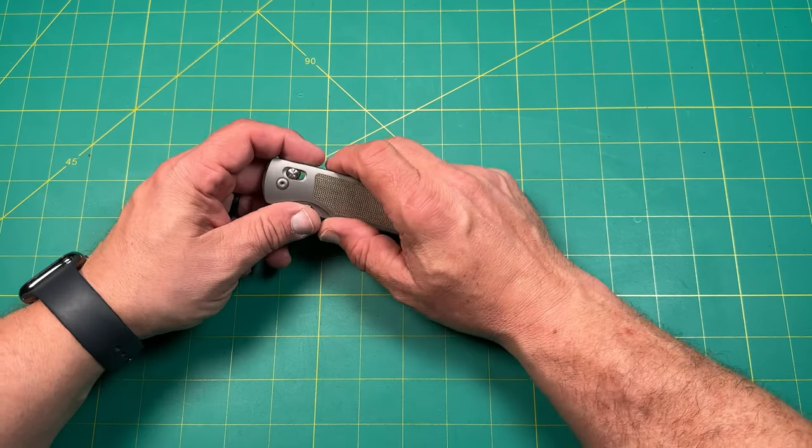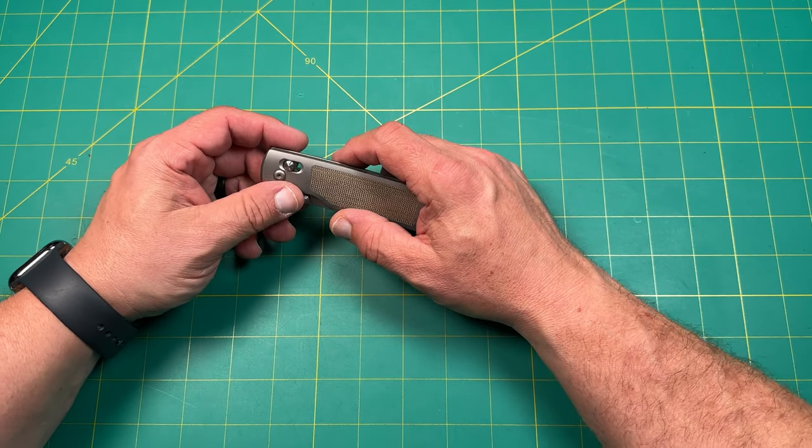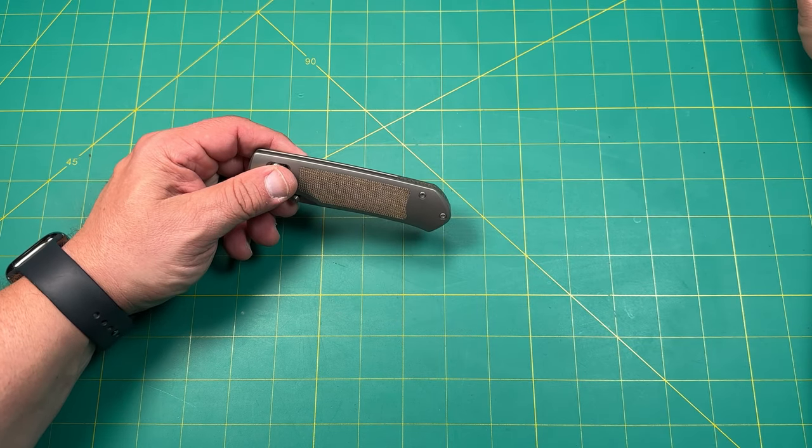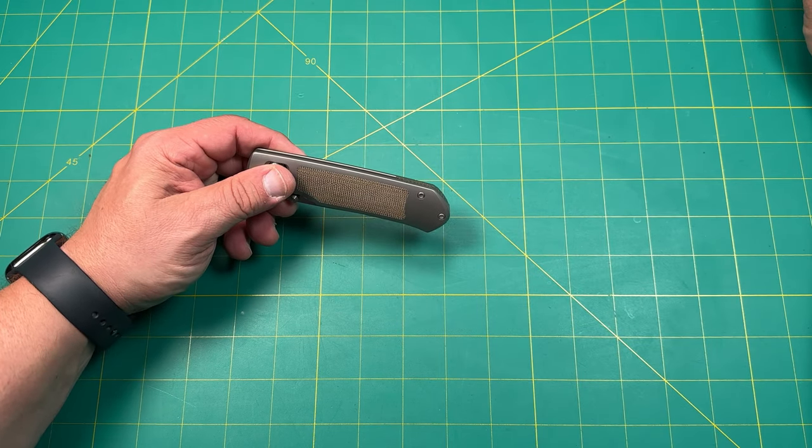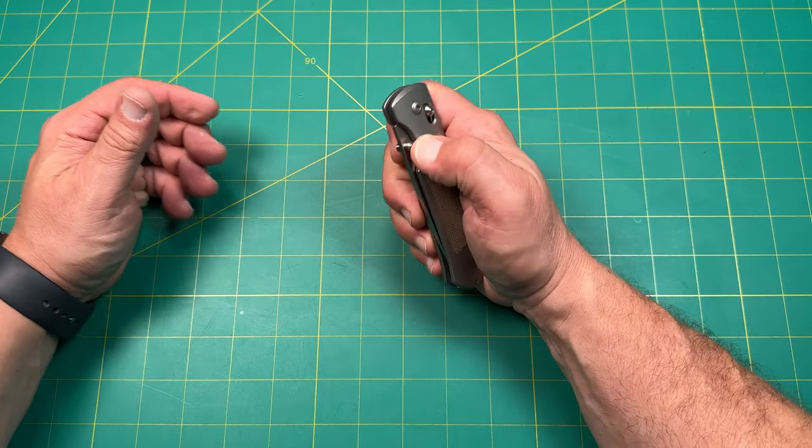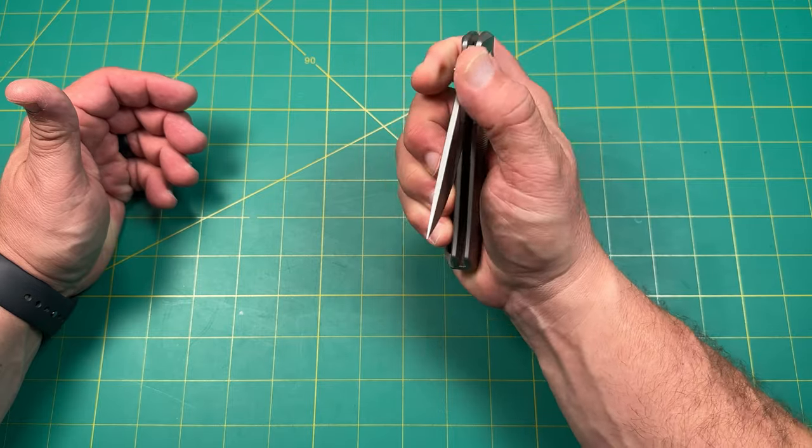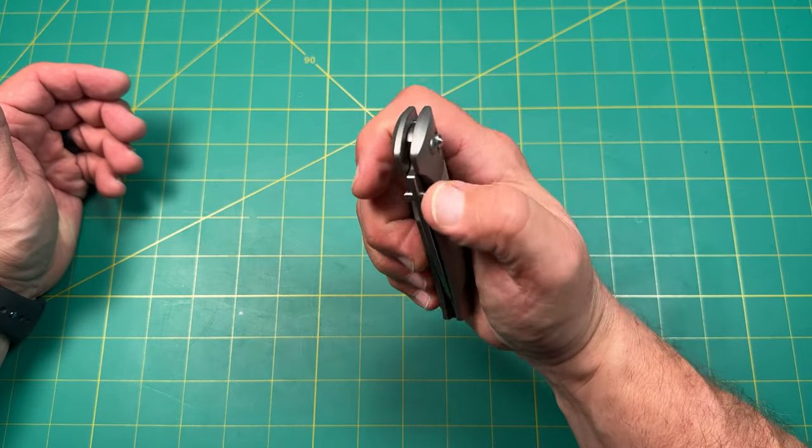All right, I'm back. So this is the GOAT AXL. I'm not sure what that stands for, but let's see. I've got a little site here. It's M390 blade steel, eight and a quarter inches is what it says it's supposed to be. The blade is supposed to be three and a half inches. So this is axis lock, or what they call a crossbar lock.